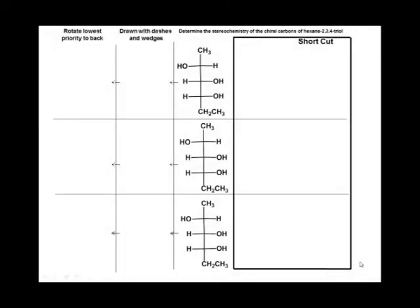Starting with the top carbon, prioritize the atoms or groups attached to the carbon. Oxygen will be the highest, followed by the chain bonded to the alcohol, then the methyl, and the hydrogen will have the lowest priority.